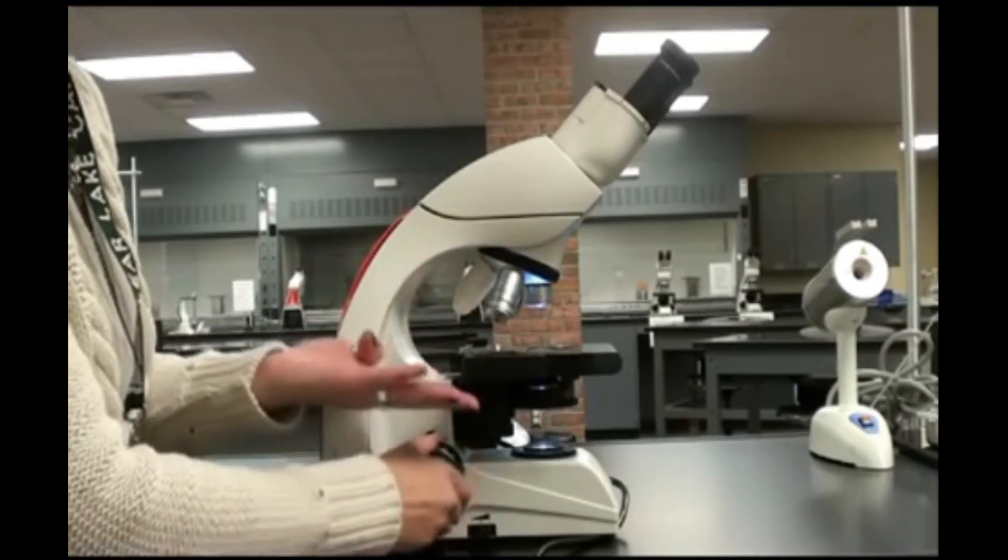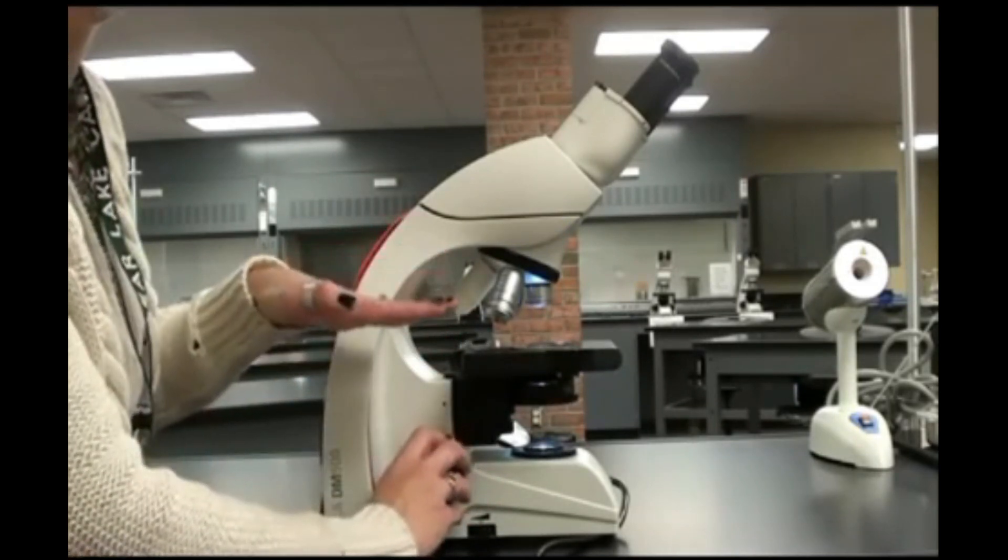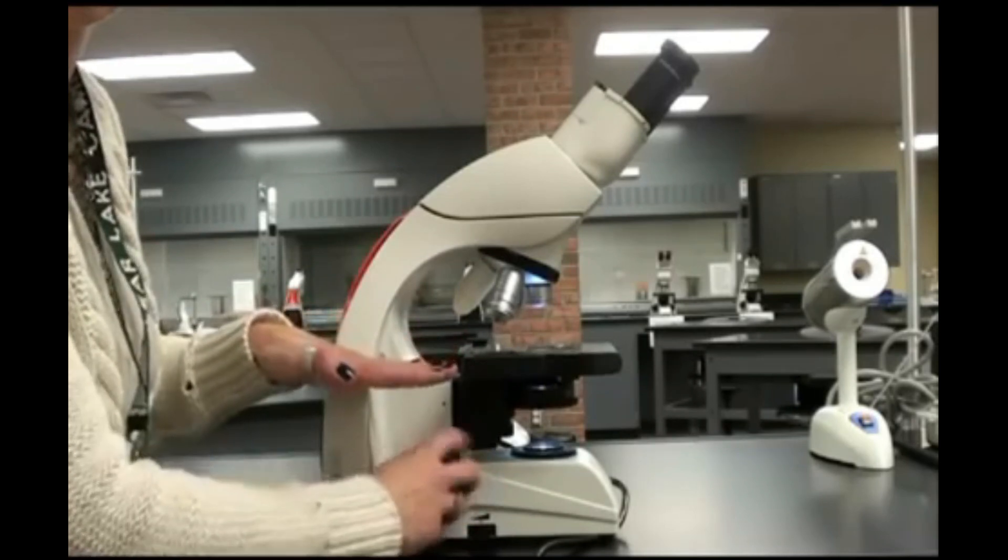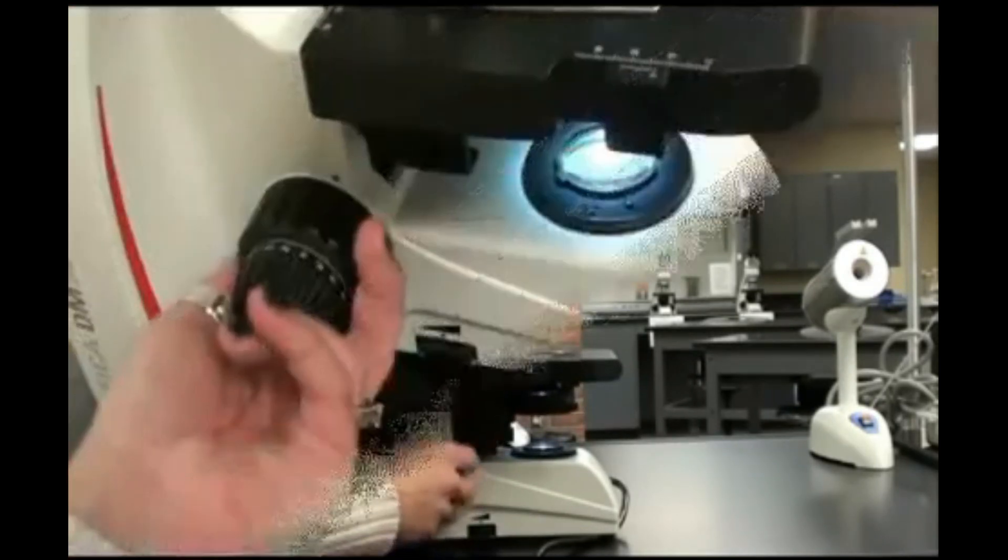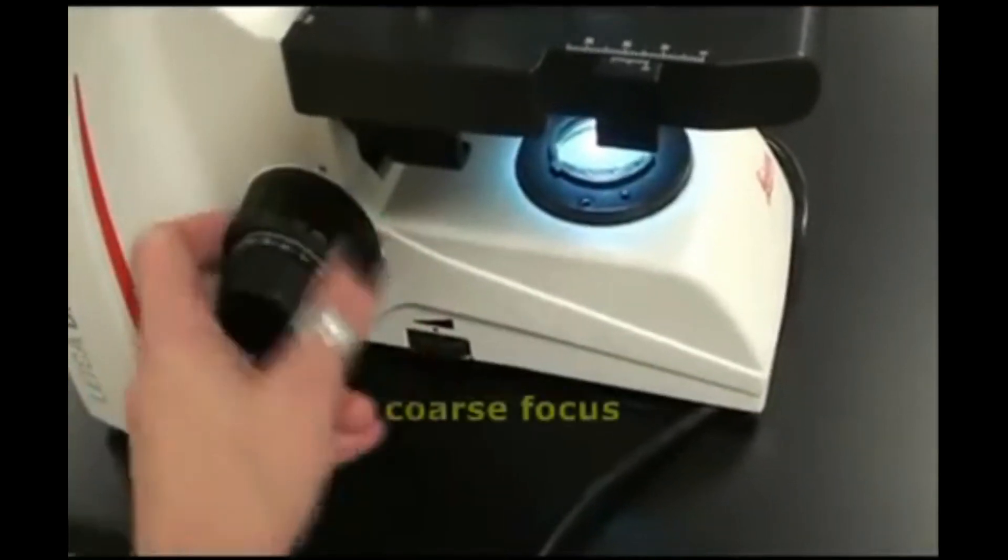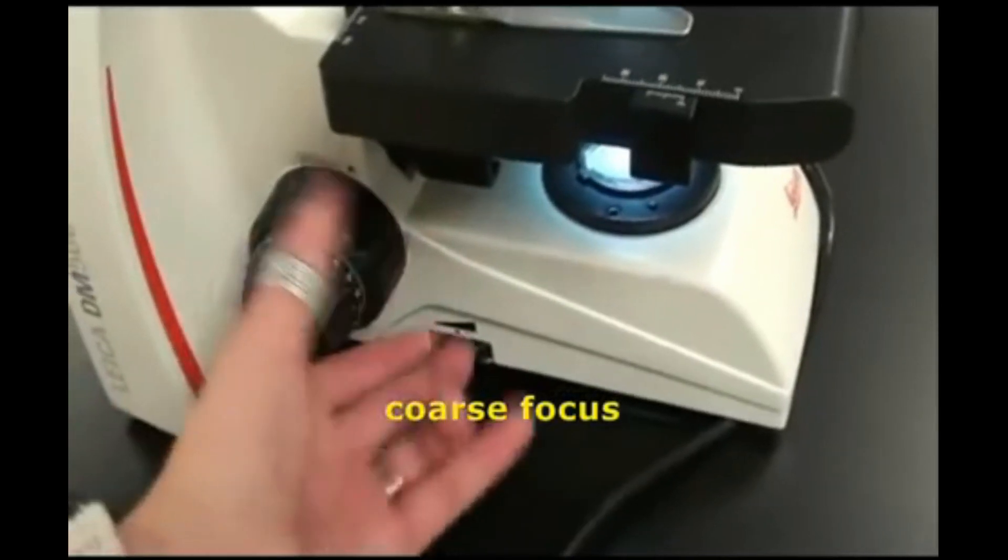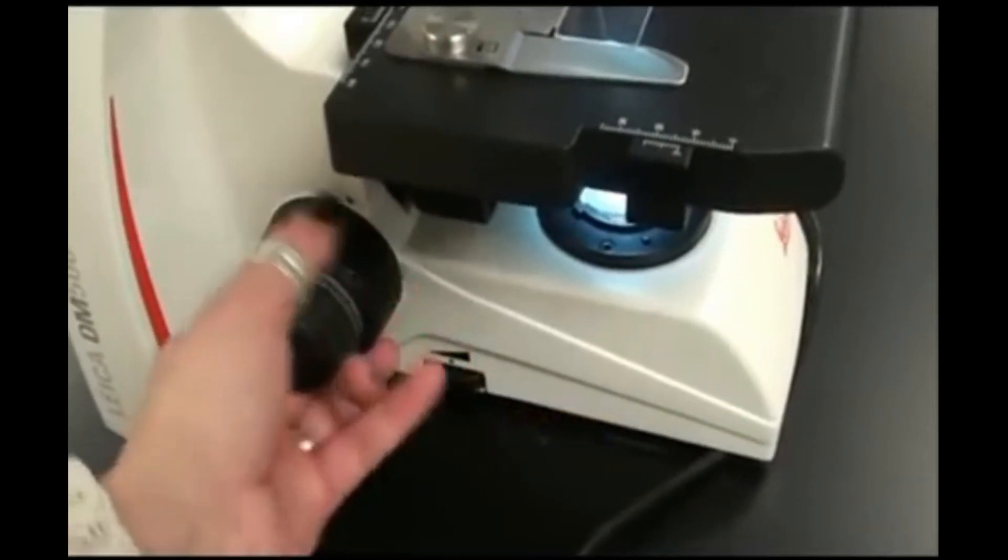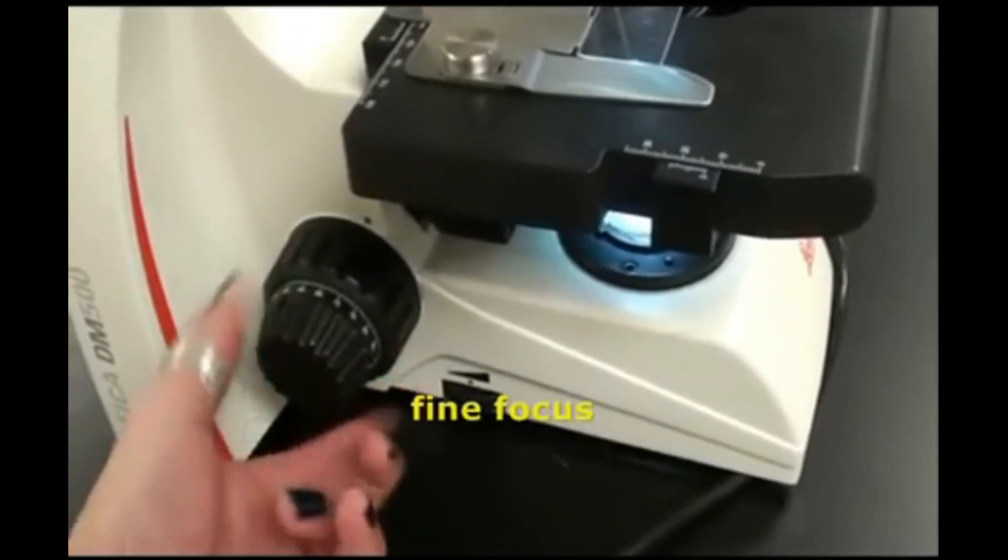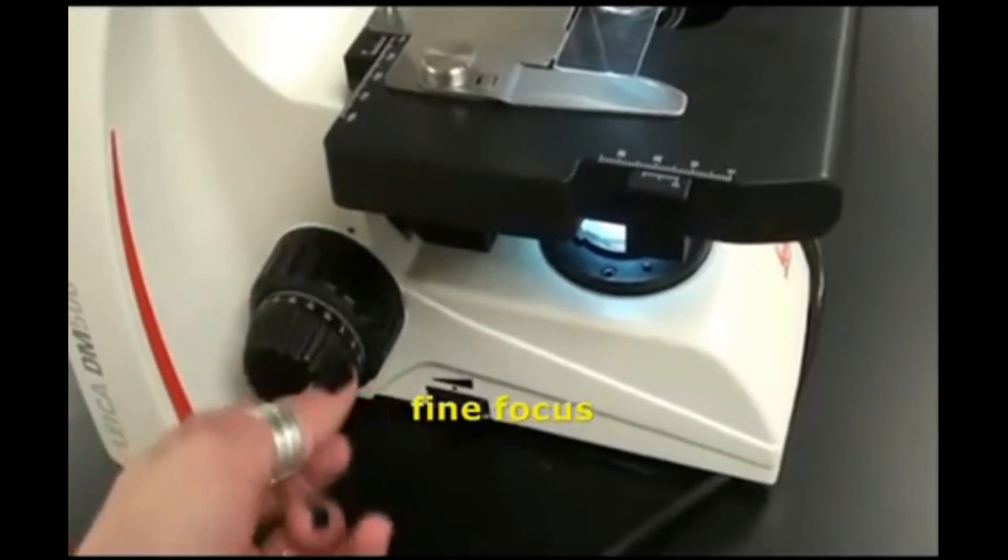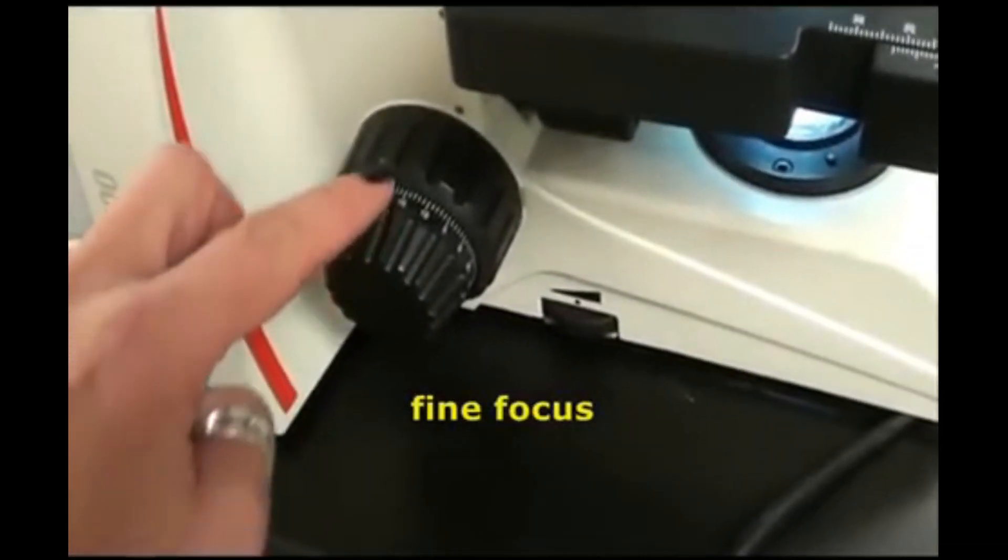The focus knobs raise and lower your stage and the vertical position of your specimen is what determines whether it is in focus or not. On this scope, the coarse focus can be adjusted by turning the part of the knob that's closest to the body of the scope. The fine focus can be adjusted by manipulating the outer portion of this knob, doing so fine-tunes the image of my specimen.